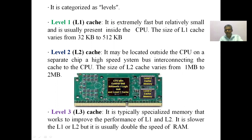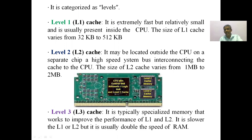Level 1 cache is extremely fast but relatively small. It is usually present inside the CPU — it is processor-resident or CPU-resident memory. Because it resides inside the CPU, the processing speed is very high. The L1 cache varies from 32 KB to 512 KB only — the capacity is very small, but since it is a resident of the CPU, the processing speed can be increased.